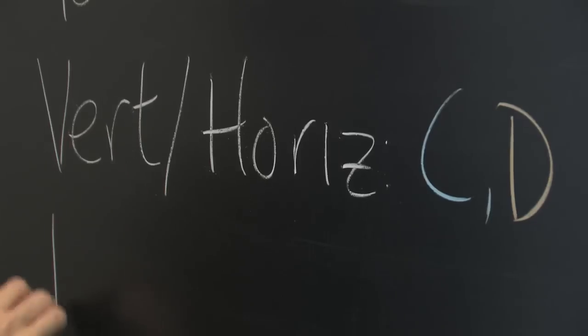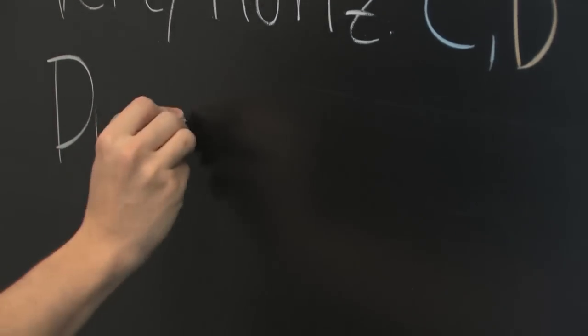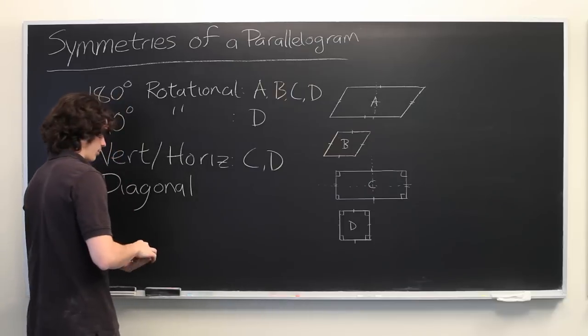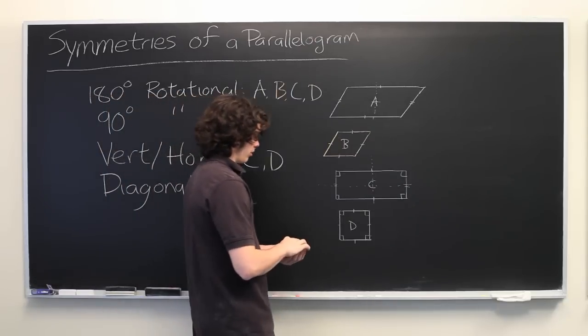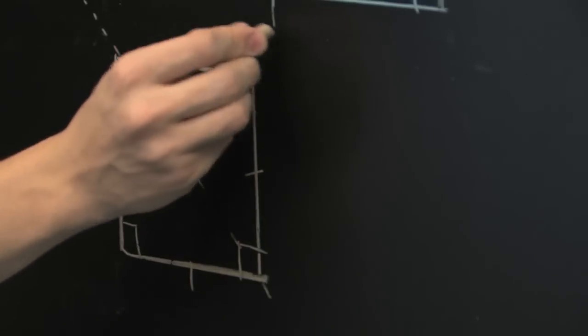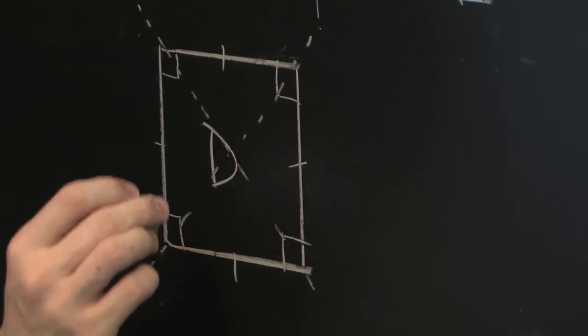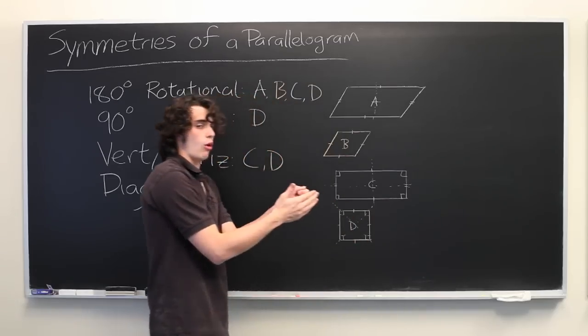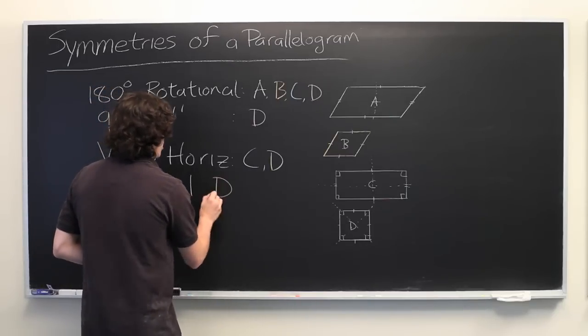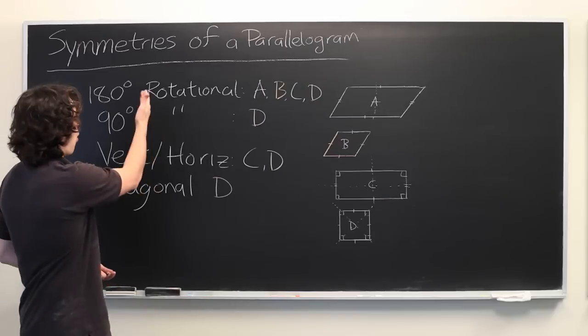And finally, what about diagonal lines of symmetry? Ones that run from one vertex to the opposite vertex. Here, the square wins again. That is, this is the only type of parallelogram that has that property. You can fold this over, and you'll get two triangles that overlap exactly. Again, square is a very wonderful parallelogram in that it displays all of these properties.